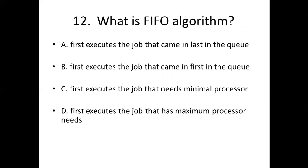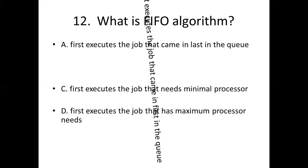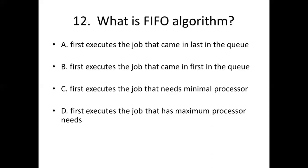Twelfth bit: What is FIFO algorithm? Option A: First executes the job that came last in the queue. Option B: First executes the job that came first in the queue. Option C: First executes the job that needs minimal processor. Option D: First executes the job that has maximum processor needs. Answer: Option B — First executes the job that came first in the queue.